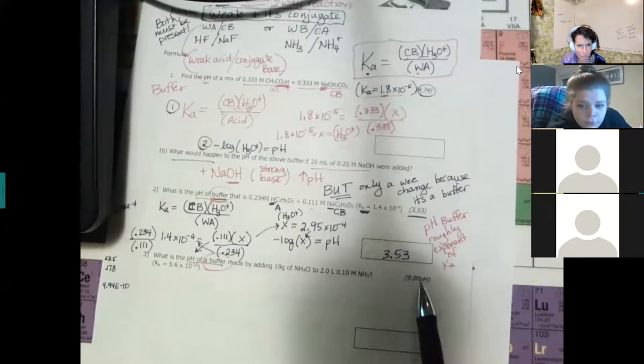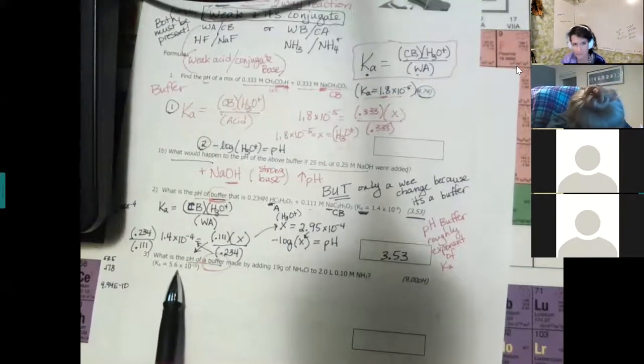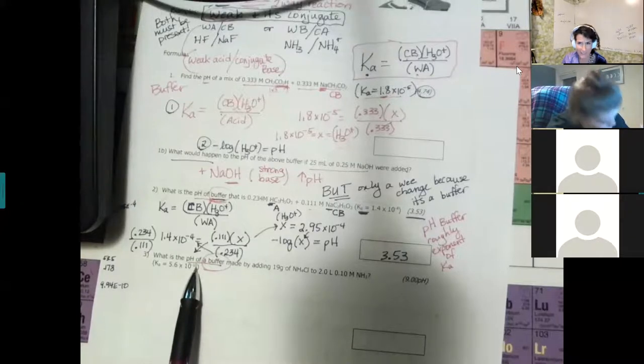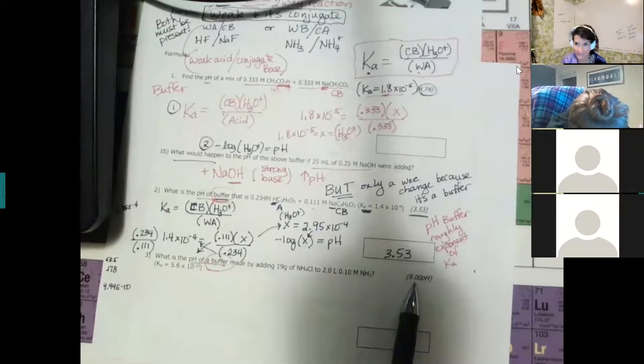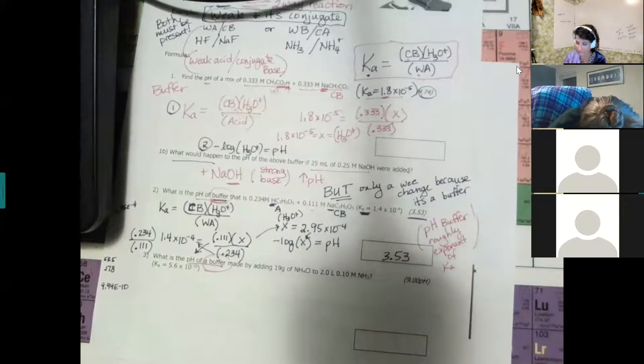A useful trick with buffers: the pH should be roughly equal to the absolute value of the Ka exponent. If Ka = 1.4×10⁻⁴, the exponent is −4, so pH is around 4. If Ka exponent is −5, pH is around 5. If exponent is −10, pH is around 10. This works because it's a ratio.